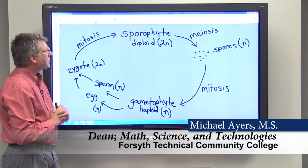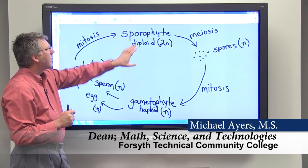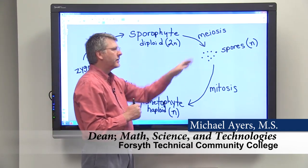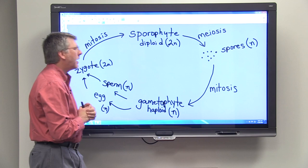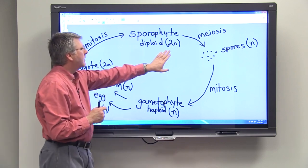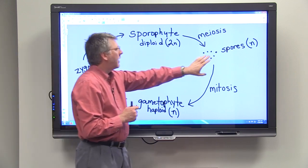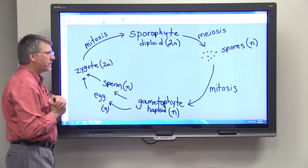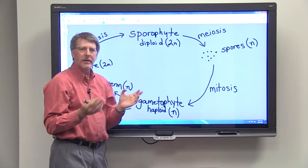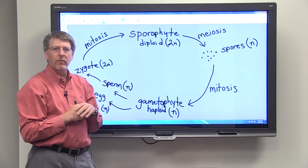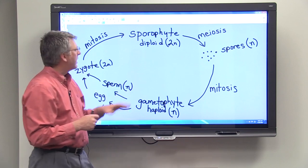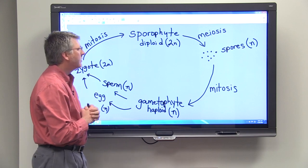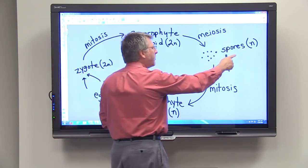Now, in the sporophyte generation, there are special structures where meiosis takes place. And when meiosis takes place, we have a diploid cell that divides by this process of meiosis and produces haploid spores. Now, what this looks like depends upon the kind of plant that we're dealing with. But just in general, remember that sporophytes produce spores by meiosis. These spores are haploid.